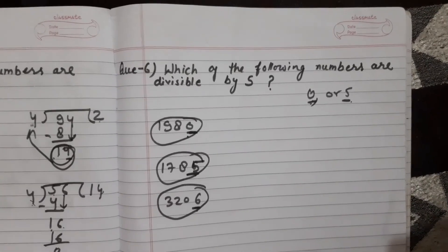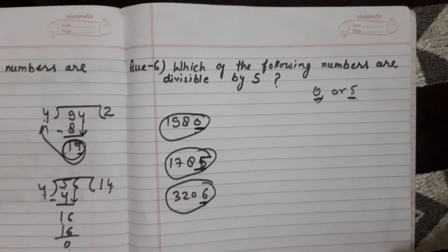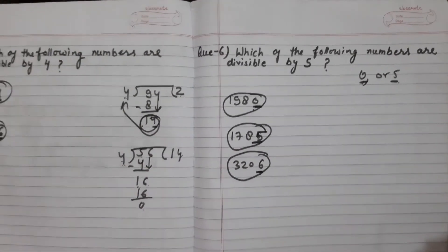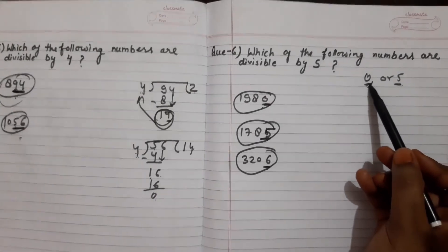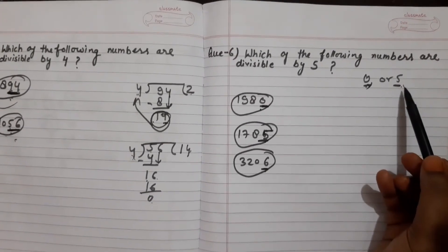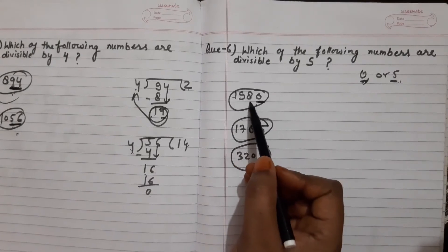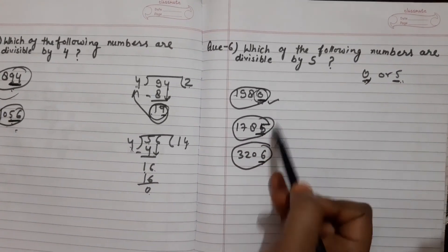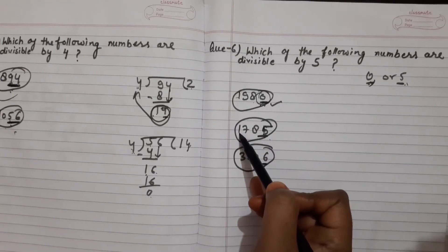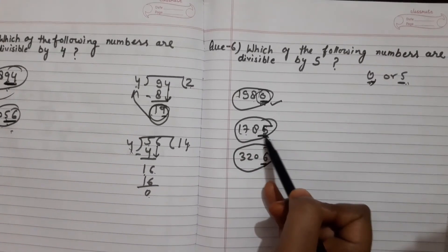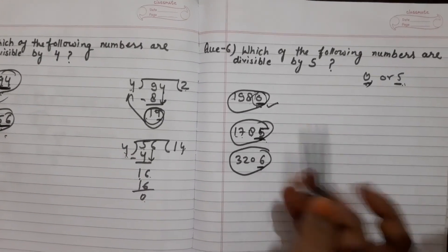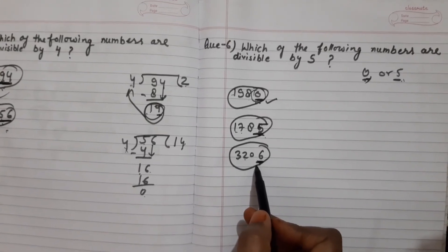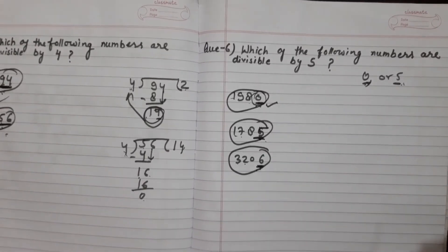The last question: which of the following numbers are divisible by 5? A number is divisible by 5 if its unit digit is 0 or 5. For 1,980, the unit digit is 0, so it is divisible by 5. For 1,785, the unit digit is 5, so it is divisible by 5. For 3,206, the unit digit is 6, so this number is not divisible by 5. Thank you very much.